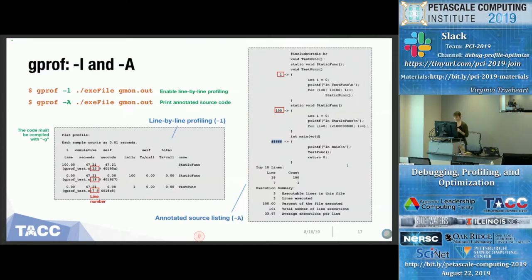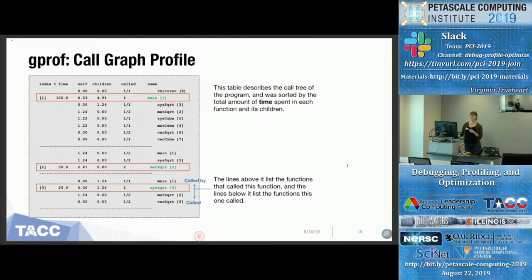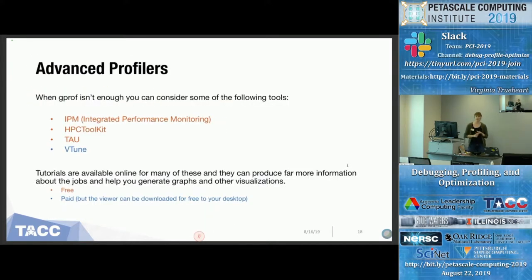Regarding GPROF with parallel programs: yes, you can use it, but you're going to get a lot of output — it's tracking every single task. If you use it with a parallel or MPI program, you'll get feedback for every one of those tasks. A more advanced tool like HPC Toolkit or TAU might be better for profiling if you're using MPI or have a highly parallelized code, because those tools are more capable of handling that much output and have functions built in to group particular MPI tasks.